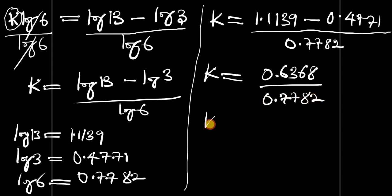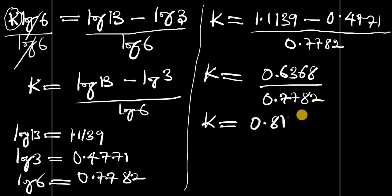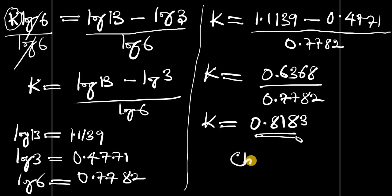Dividing, k equals 0.8183 to four decimal places. But that's not all — let's also check if what we have done is correct, so let's do that on the next slide.